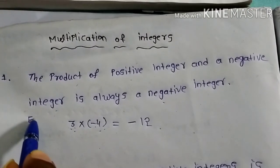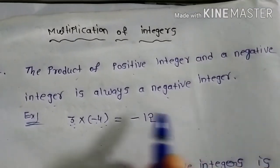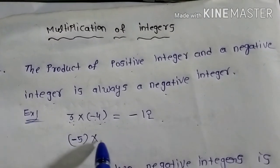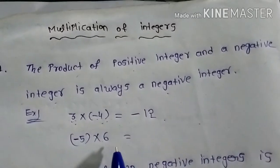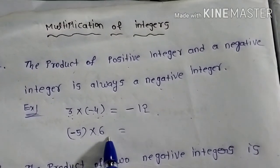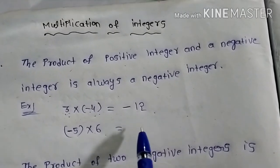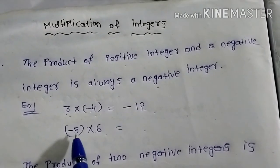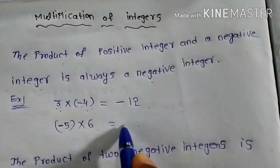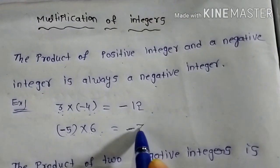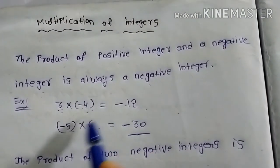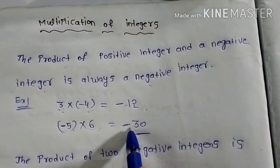These are examples only. For example, minus 5 into 6. This is the product of a negative integer and a positive integer. This will also be a negative integer. Why? Because minus into plus gives minus only. 5 times 6 is 30, so your answer is minus 30. Plus into minus gives minus. Minus into plus gives minus only.